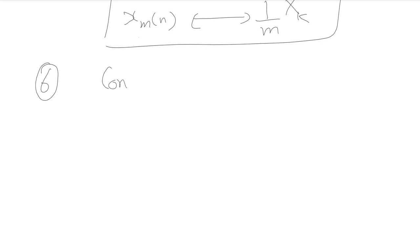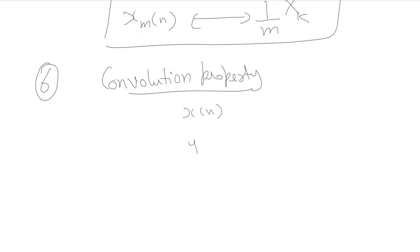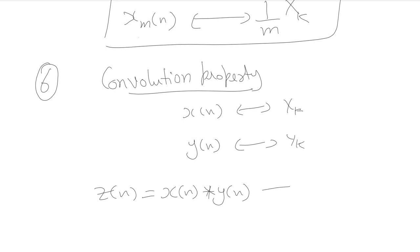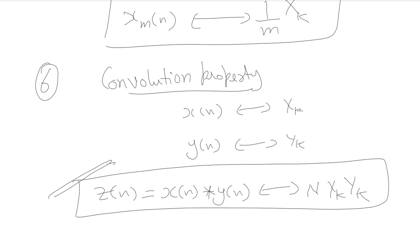The next property is the convolution property. Convolution in the time domain results in multiplication in the frequency domain. If x[n] and y[n] are two periodic discrete time signals with corresponding coefficients x[k] and y[k], and z[n] is their convolution, then the corresponding coefficient of z[n] is N·x[k]·y[k], where N is the fundamental period. Convolution in time gives multiplication in frequency, scaled by N.